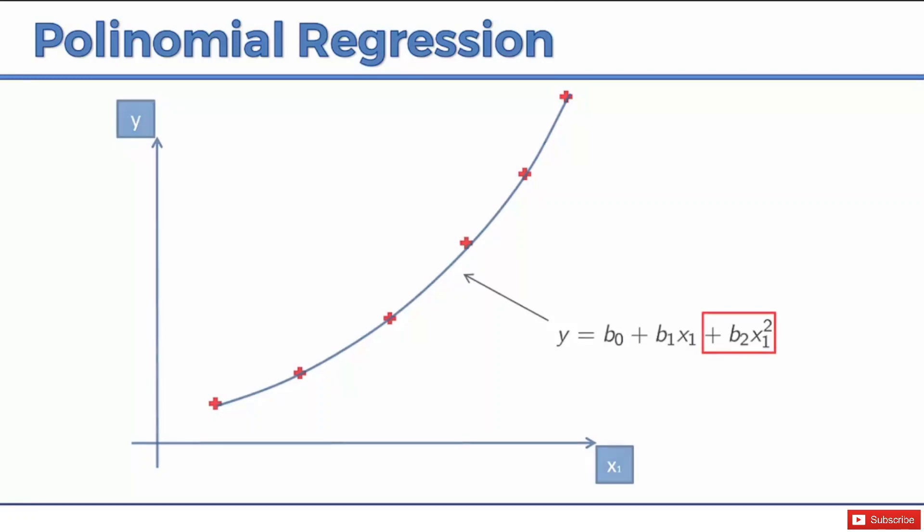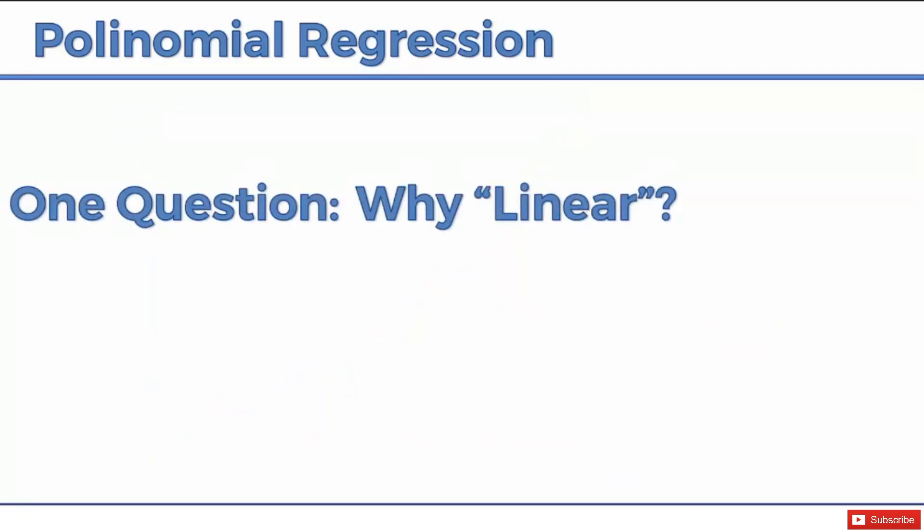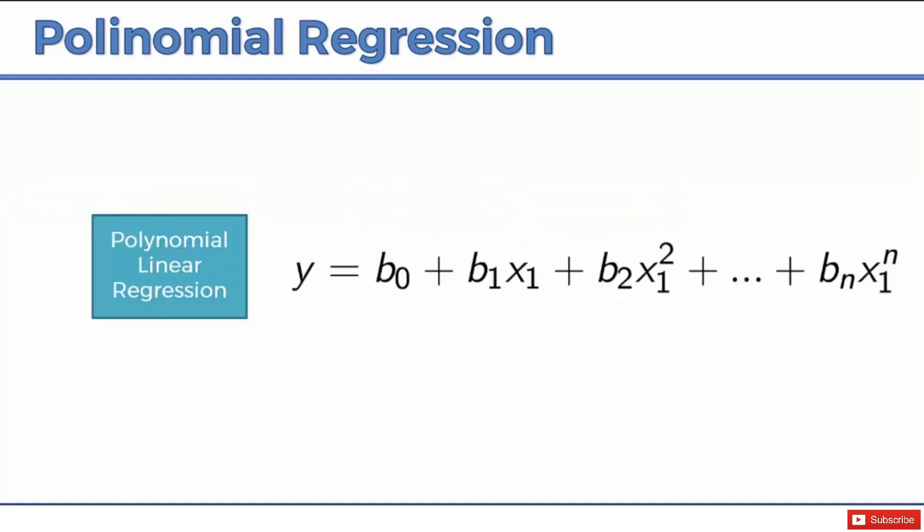And we have one final question left. The question is, why is it called linear still, right? So we saw those different powers, squared, cubed to the power of n, and so on, why is it still called linear? And I'll show you what I mean. If you look on the left here, it says polynomial linear regression. So why is it still called a linear regression if it's a polynomial regression?